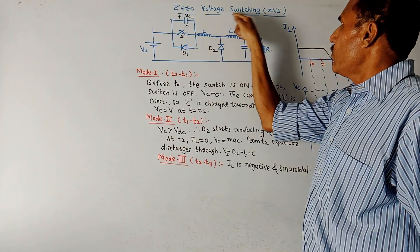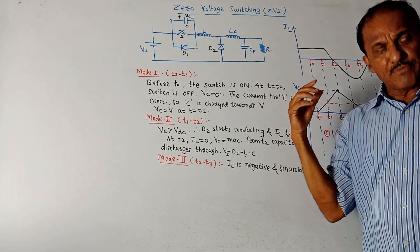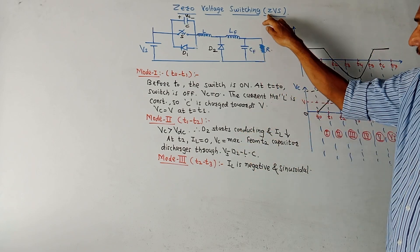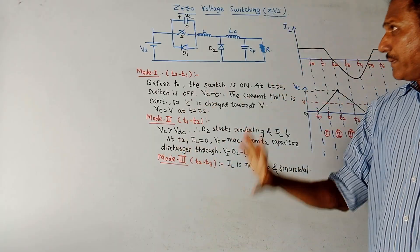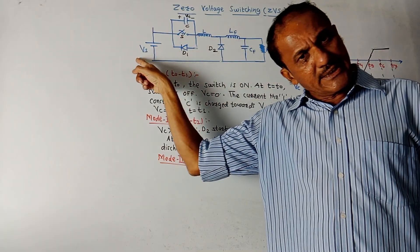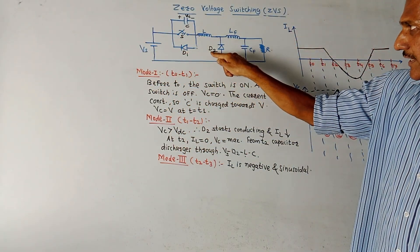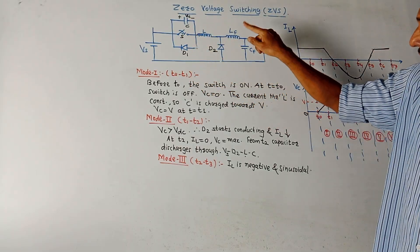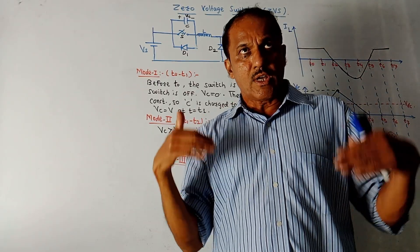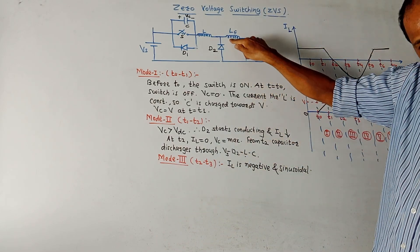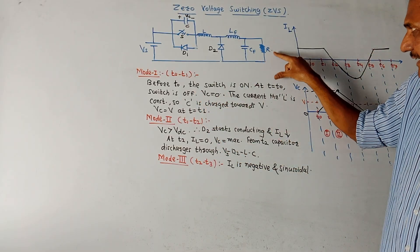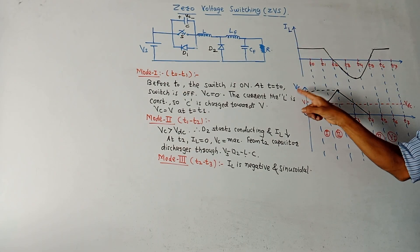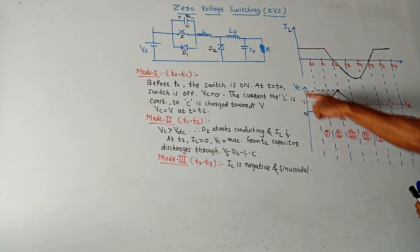Next part is zero voltage switching, ZVS. It is similar to ZCS — but on the contrary, whenever voltage crosses zero, switching takes place. In the circuit diagram: S is the switch, VS is the input voltage, D1 and D2 are freewheeling diodes, capacitor C is connected in parallel with the switch with voltage VC across it. Lf and Cf act as a filter circuit, and R is the output resistance. Two waveforms are shown: IL (inductor current) versus time, and VC versus time.